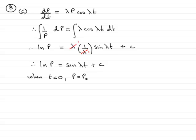So if we substitute this into equation 2, we have ln p₀ = sin(λ × 0) + c. The sin of 0, because λ times 0 is 0, is 0, and so c is equal to ln p₀.